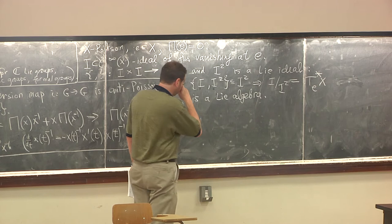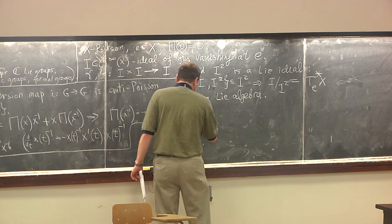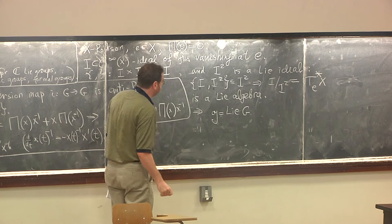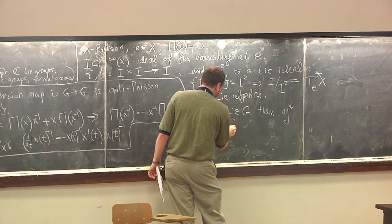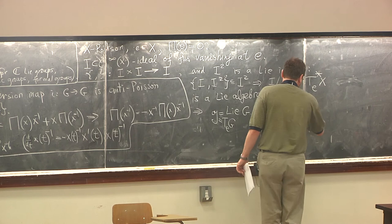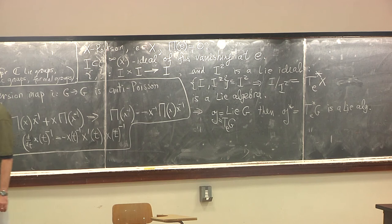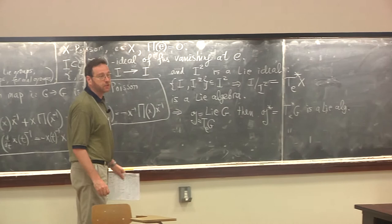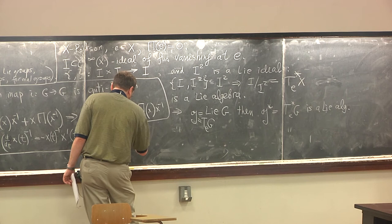In the first approximation, a Poisson manifold near a point where the Poisson bracket is zero looks like a Lie algebra. In particular, if I take a Poisson-Lie group G and its Lie algebra g, then the dual g* — which is by definition the linear cotangent space of the identity of the group — is also a Lie algebra. So we see that if we have a Poisson-Lie group G, then not only is g a Lie algebra, but the dual space g* is also a Lie algebra.